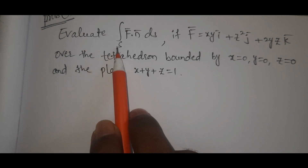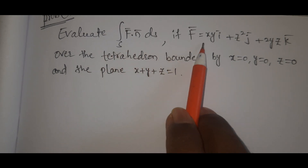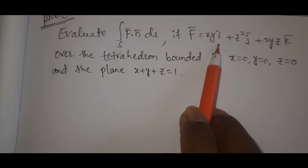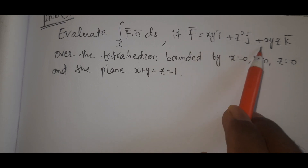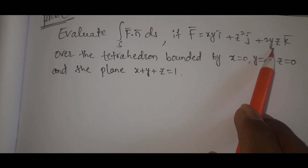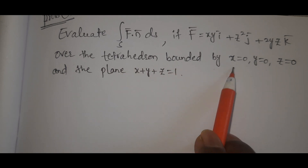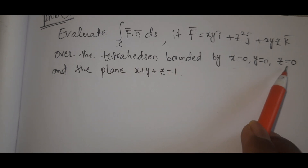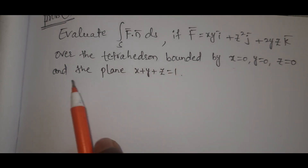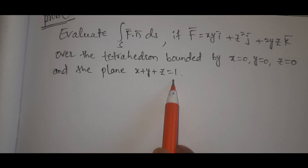Evaluate the integral of f-bar dot n-bar ds, where f-bar equals xy i-bar plus z-squared j-bar plus 2yz k-bar, over the tetrahedron bounded by x equal to 0, y equal to 0, z equal to 0, and the plane x plus y plus z equal to 1.